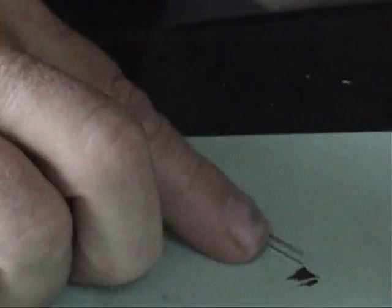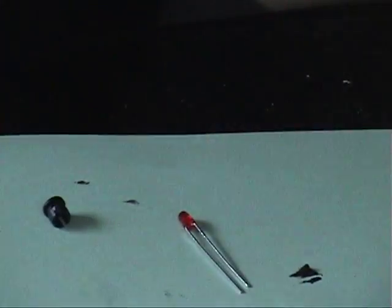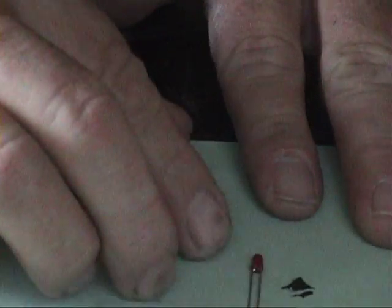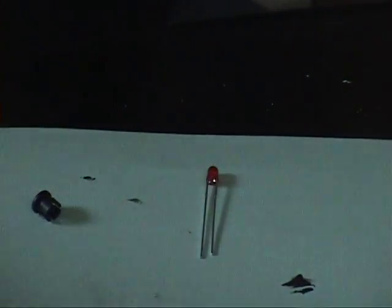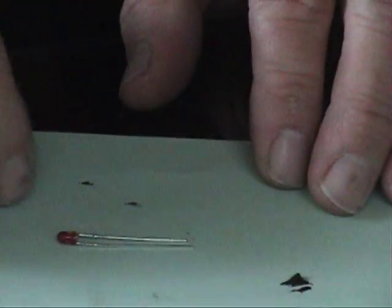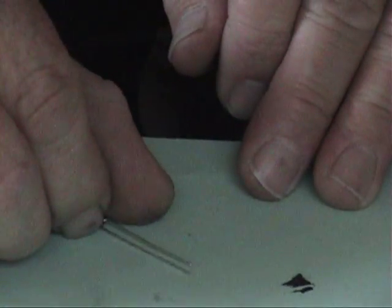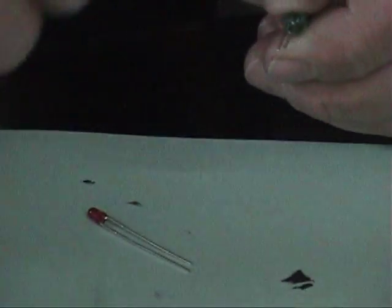Like I said, one short and one's long. You see how one is slightly longer than the other one? The long one, maybe you could see it this way, the long one is positive. So what I normally do is I will take the short one and I will clip it nice and short first, and then I will take the next one and clip it slightly longer so I remember that the long one is positive.